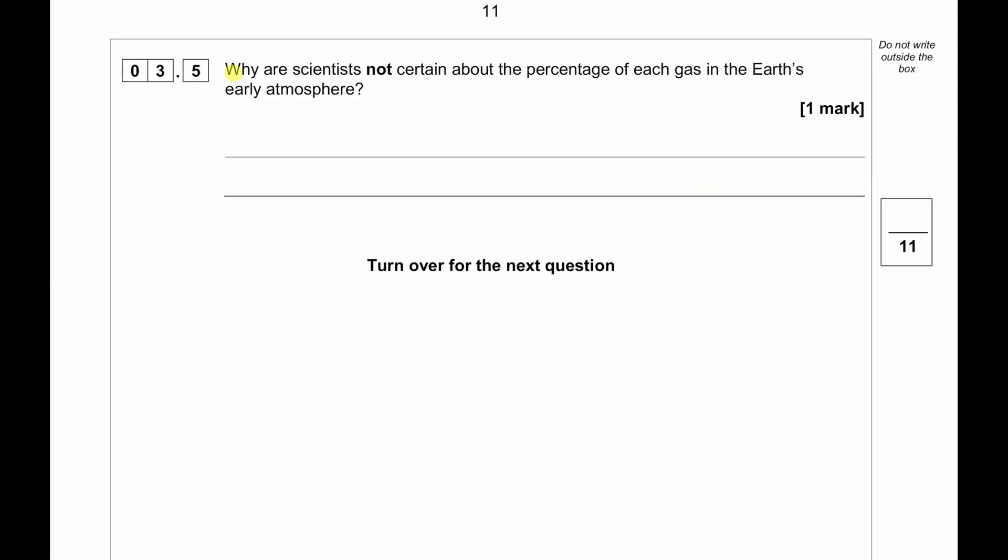Why are scientists not certain about the percentage of each gas in the Earth's early atmosphere? Because the scientists have very little evidence about what occurred 4.6 billion years ago.